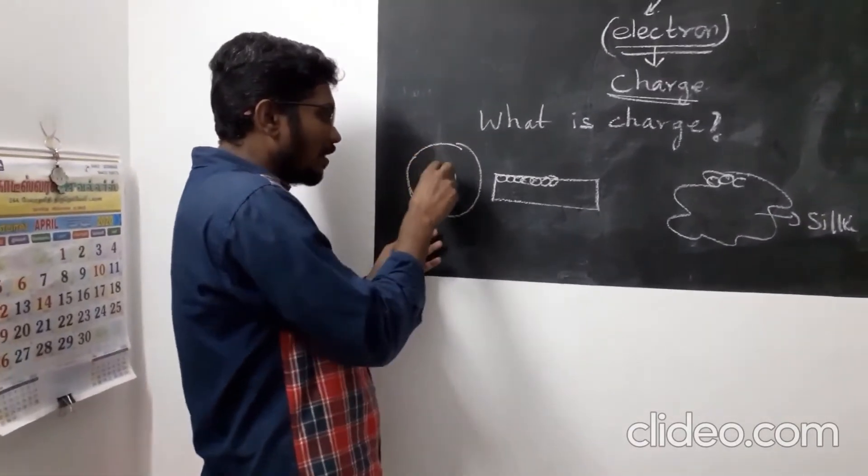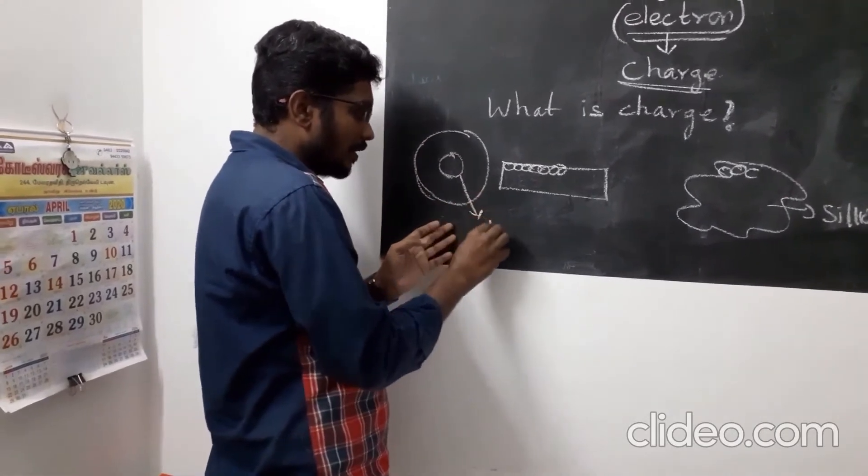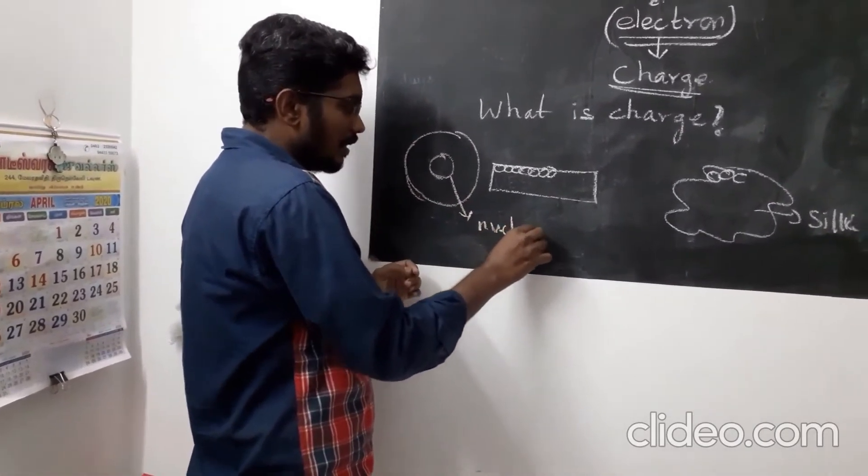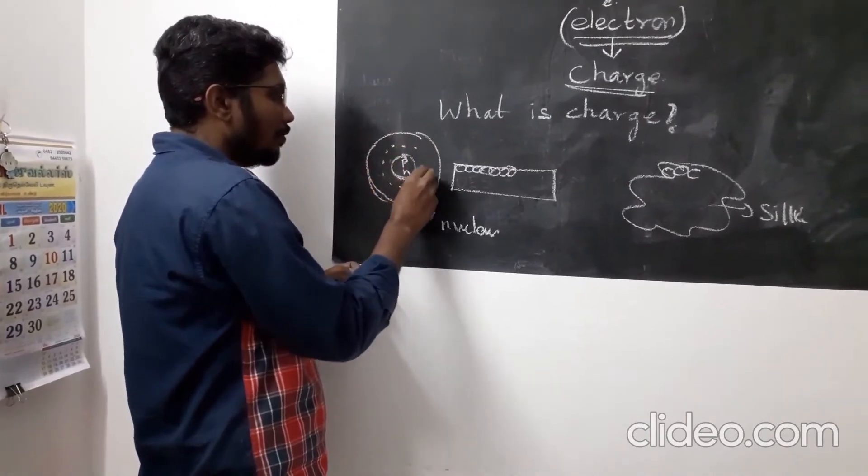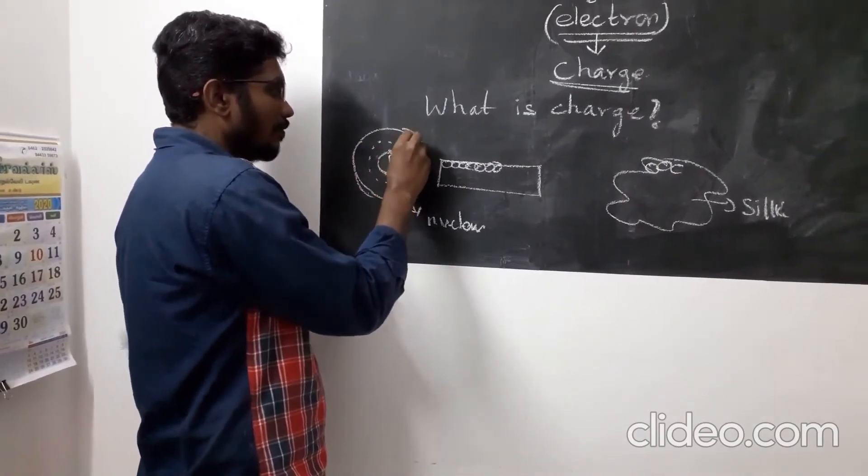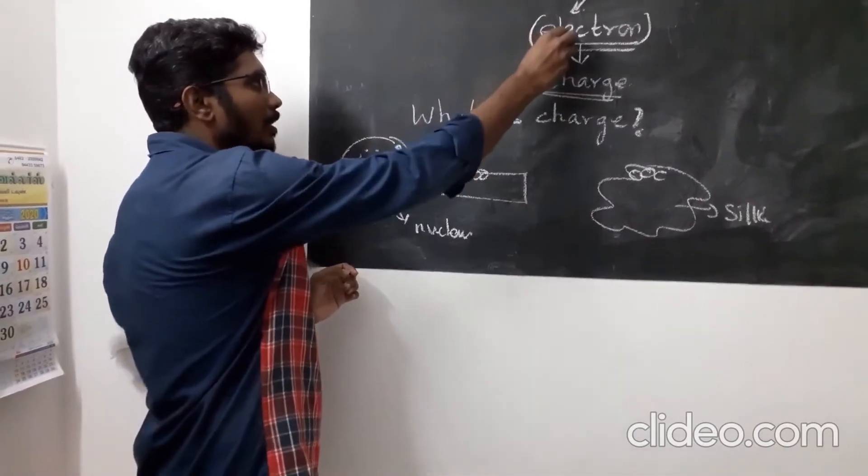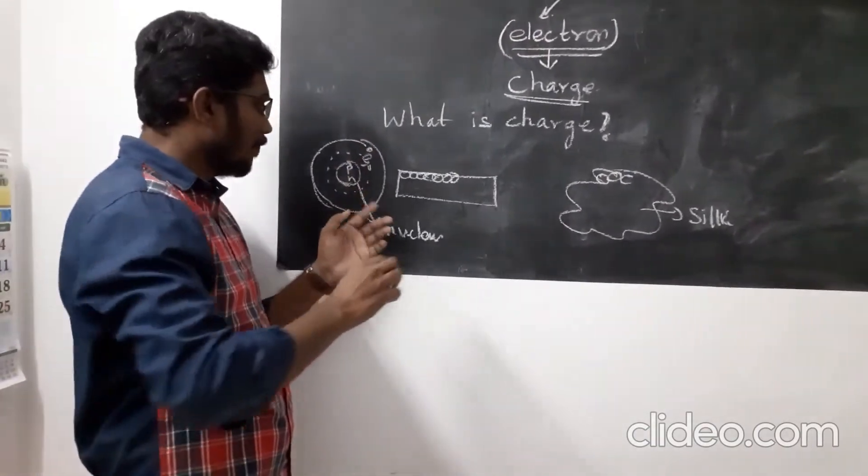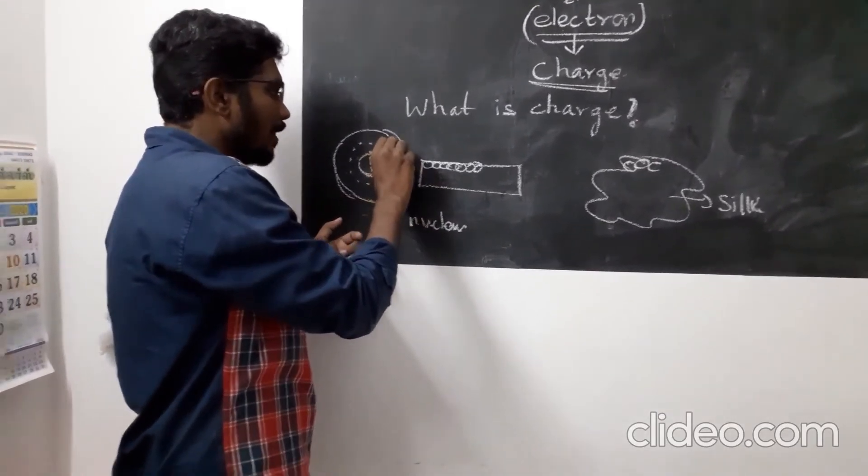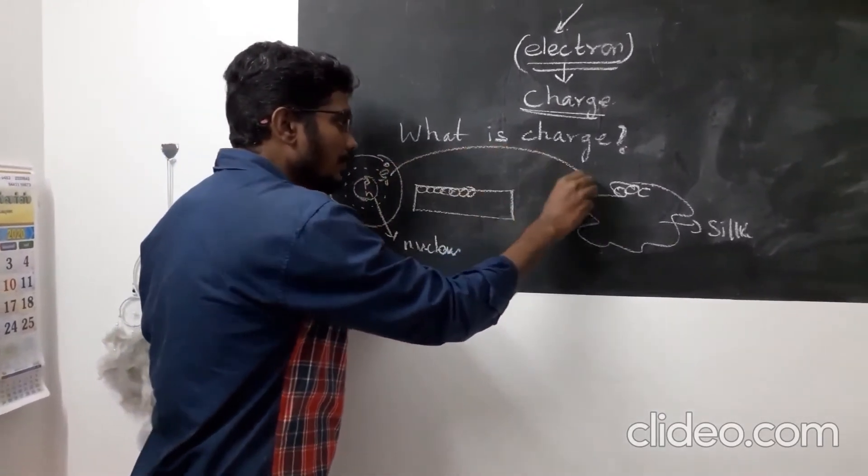There is another tiny spherical ball inside, which we call the nucleus. Inside this nucleus, protons and neutrons exist. Around the empty space, an important subatomic particle called the electron orbits around it. And when it gets rubbed, this electron will be transferred from one body to another.